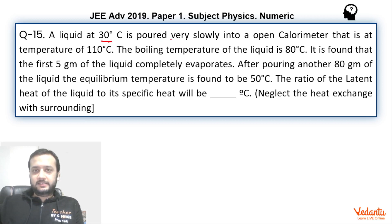So let's see this question. A liquid at 30 degrees celsius is poured very slowly into an open calorimeter which is initially at 110 degrees celsius. The boiling temperature of the liquid is 80 degrees celsius and it is given that first 5 grams of the liquid evaporates completely. After pouring another 80 grams, the equilibrium temperature is found to be 50 degrees celsius.